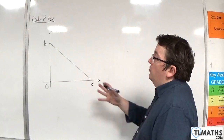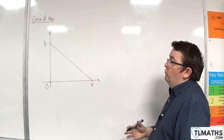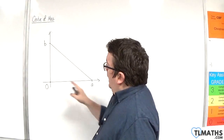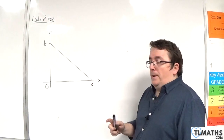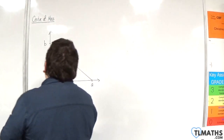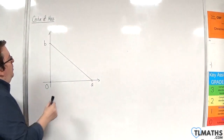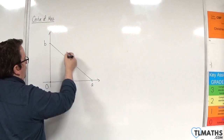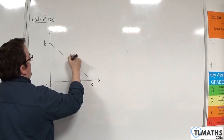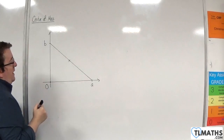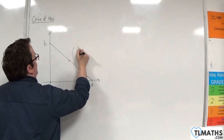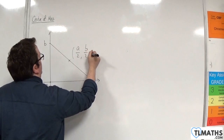So let's say we want to find the centre of mass of this right-angled triangle. It's got a height of B and a length of A. So what we would do is we would find the midpoint of this line, which is going to be somewhere here. And that point there will have the coordinates A over 2, B over 2.